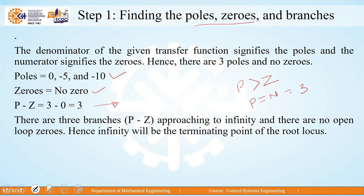There are 3 poles corresponding to 3 root locus branches. Out of these 3 branches, P minus Z equals 3 minus 0, meaning all 3 branches will go towards infinity. Since there are no open loop zeros, all three branches start from the three poles and end at infinite zeros. Step 1 has defined the number of poles, zeros, branches, and how many branches go to infinity.